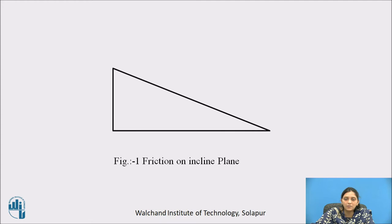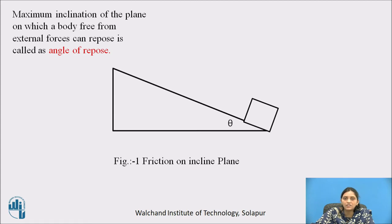In the figure, an inclined plane is shown with inclination theta and a block on the inclined plane. As the inclination increases, the block will start moving down. The maximum inclination of the plane on which a body free from external forces can repose is called the angle of repose.